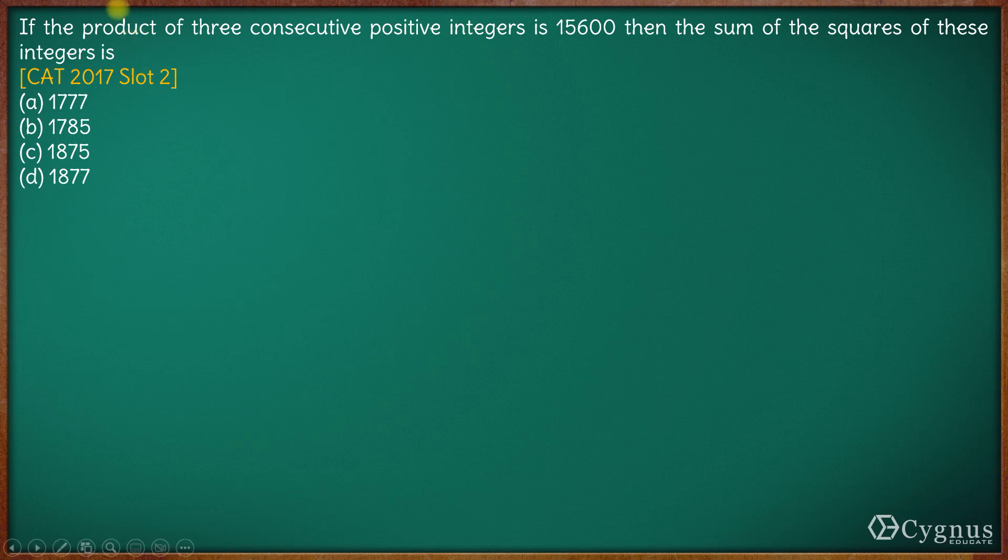Hi, so here in this question we have if the product of three consecutive positive integers is 15600, then the sum of the squares of these numbers is what?